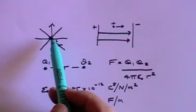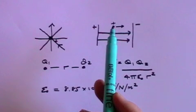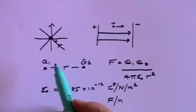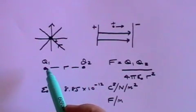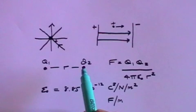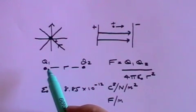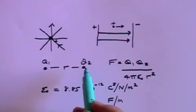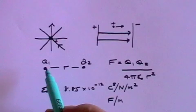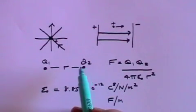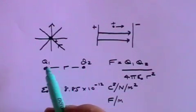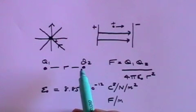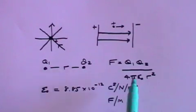Each of these charges has an electric field associated with it, and those electric fields will have an impact on any charged particle that comes into contact with the field. One charged particle is in the presence of the other's field and will experience attraction or repulsion depending on whether it's positive or negative. Equally, the other charged particle is generating a field, so both experience a force as a consequence of the other's field.